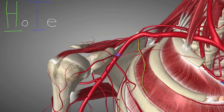The E again doesn't stand for anything, but the L stands for Lateral Thoracic Artery. Here it is on the lateral side of the thorax — the Lateral Thoracic Artery.